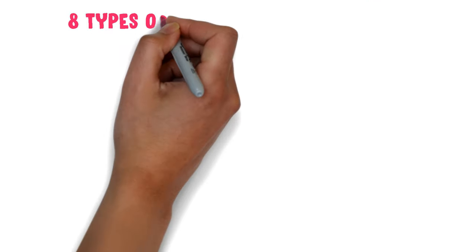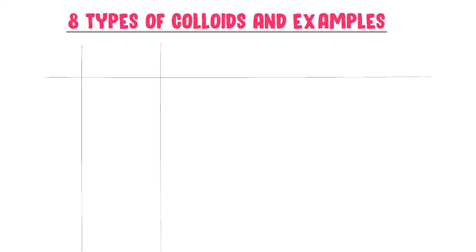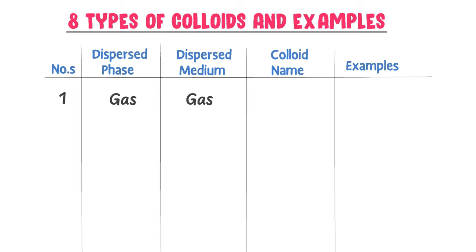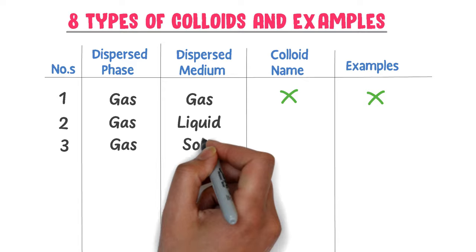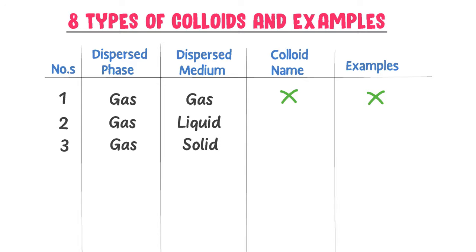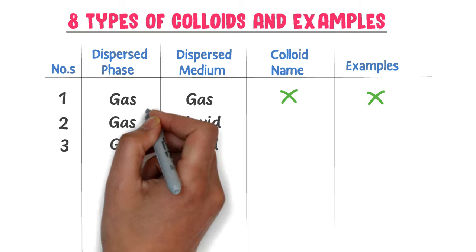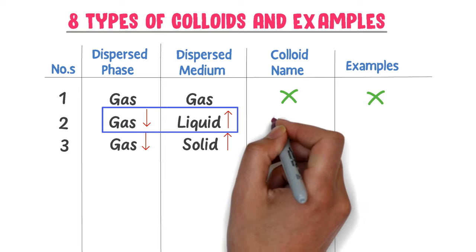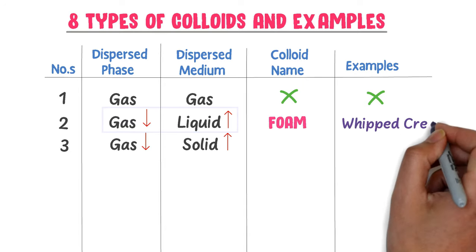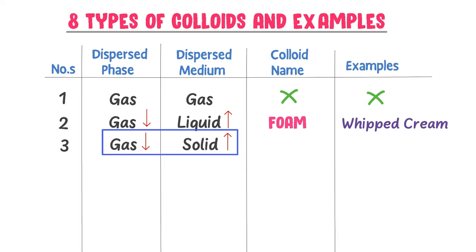Now let's cover the types of colloids and their examples. First, gas and gas: a gas and gas combination doesn't form a colloid. Second, gas and liquid, and third, gas and solid — where gases are the dispersed phase in smaller proportion, while liquid and solid are the dispersed medium in larger proportion. The name of gas and liquid colloid is foam, and its example is whipped cream. The name of gas and solid colloid is solid foam, and its example is bread.